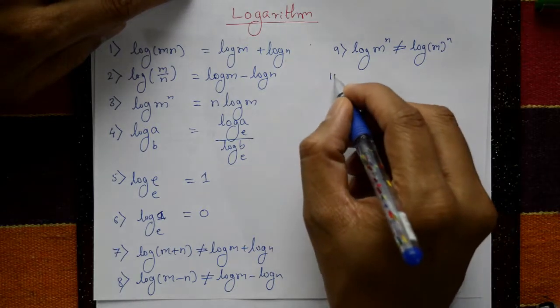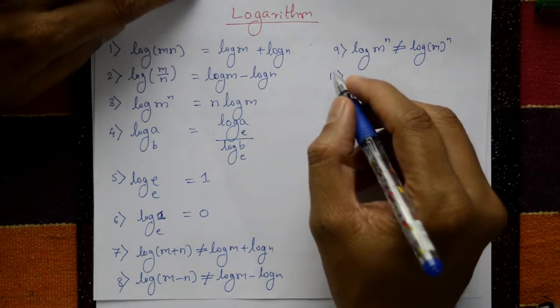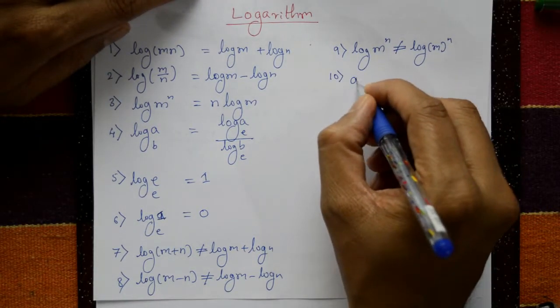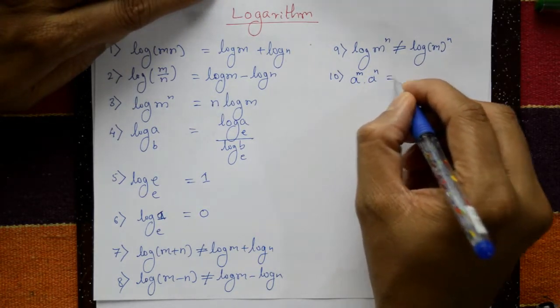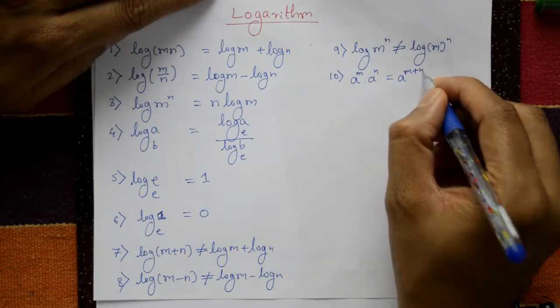Next one, not log, a raised to m times a raised to n. The base is same, so a raised to m plus n.